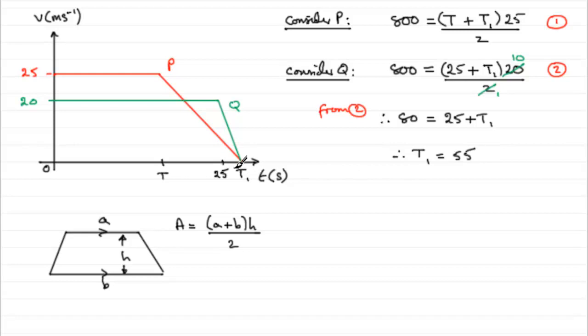So that's good, we've got what T1 is now, 55 seconds. And what we can do with this is just take this value and sub T1 equals 55 into equation 1. And if we do that, we're therefore going to have 800 equals T plus T1, T plus 55, and all of that is multiplied by 25 and divided by 2. And there's many ways that we could simplify this.